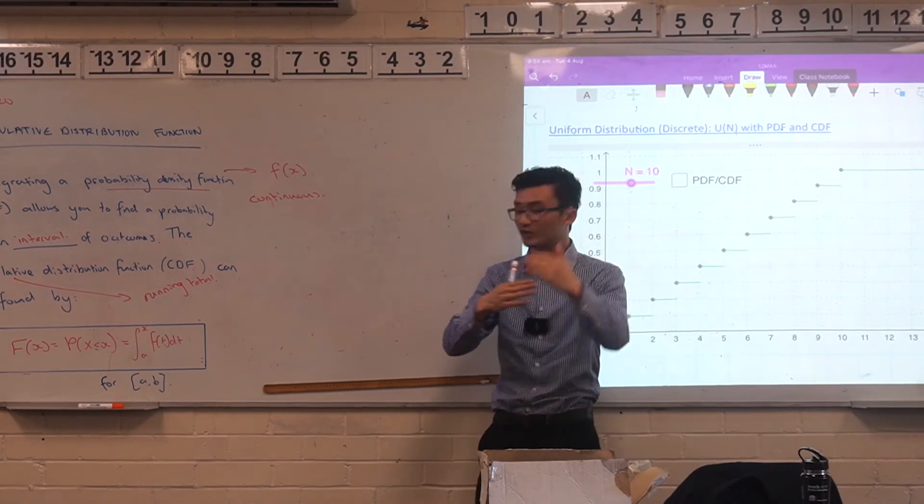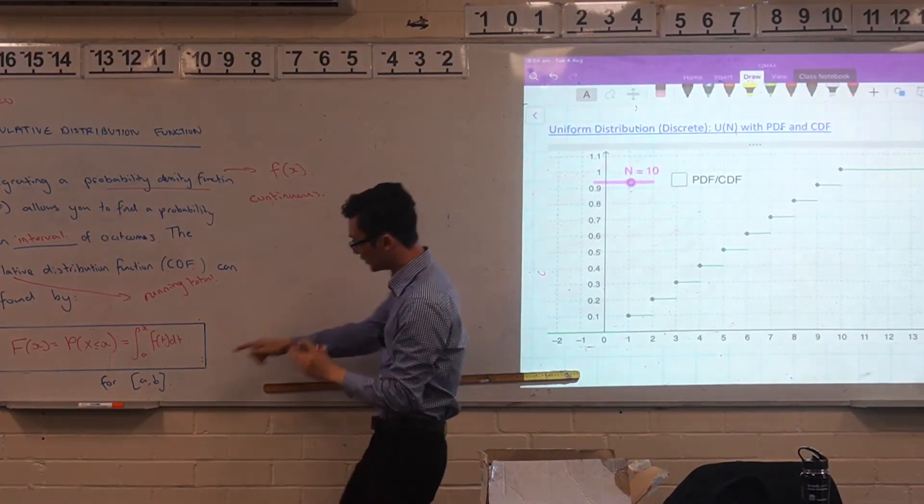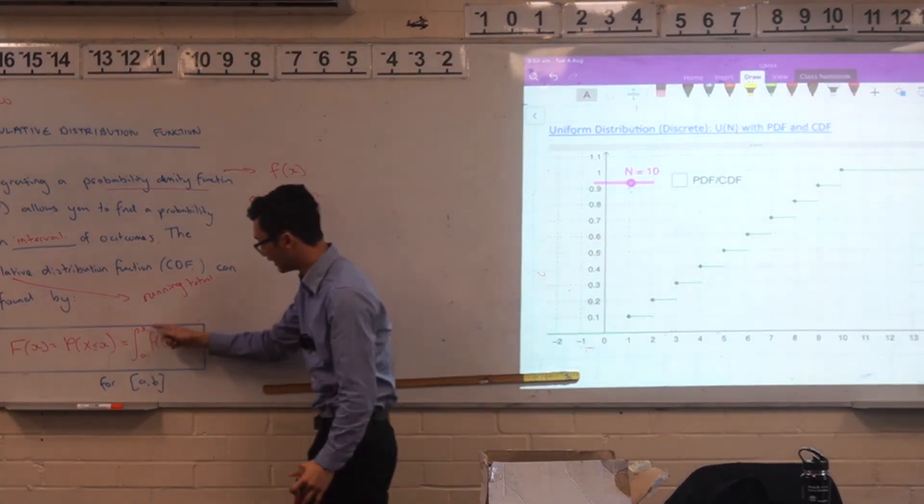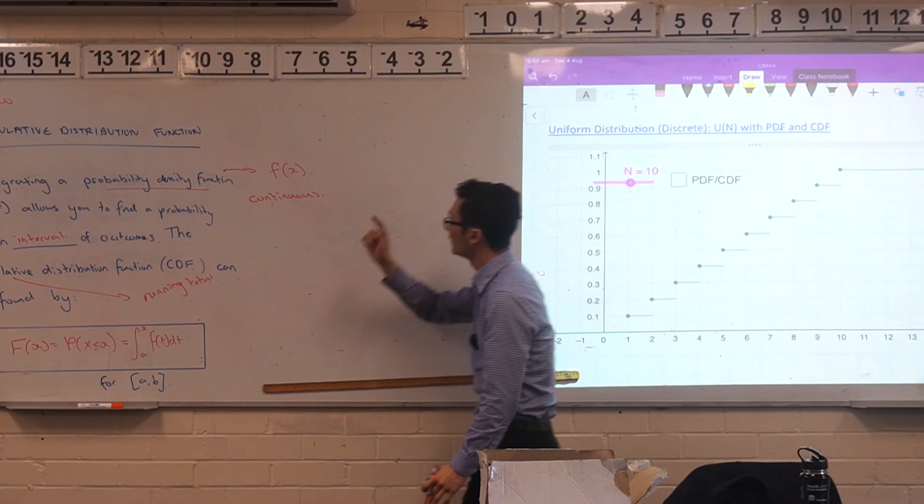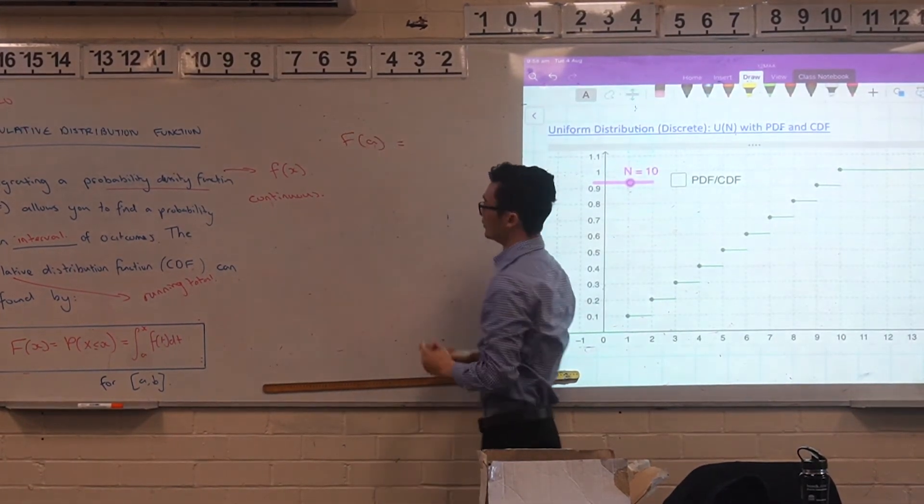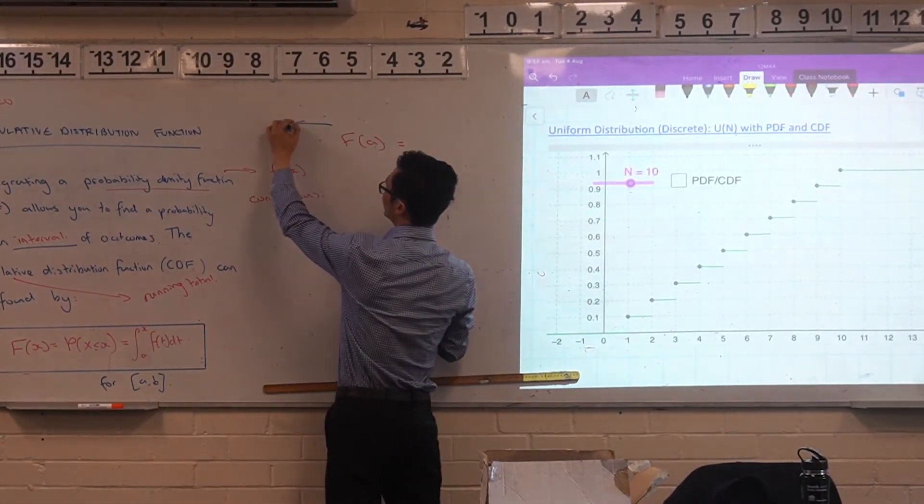So let's kind of summarize that. Some properties that we want to note down. So notice here, it's defined on the value from A to B. If you're wondering why this is going on here, I'll explain this in one second. But F of A, so at the beginning, so the capital represents the CDF. So I'm using a capital, that's the CDF. Whereas the lowercase is the PDF.